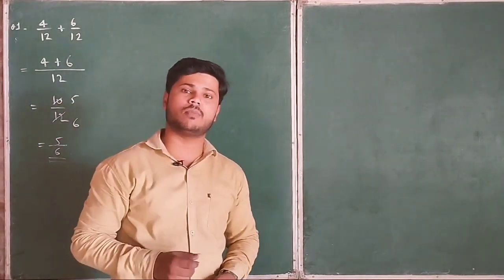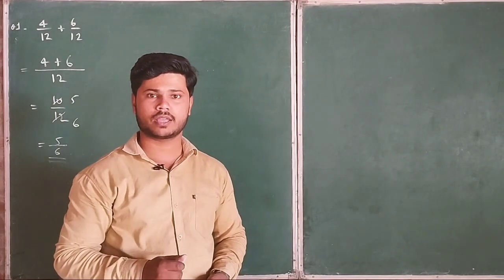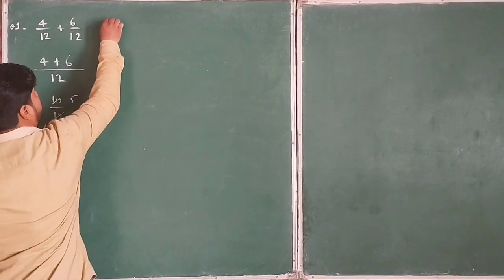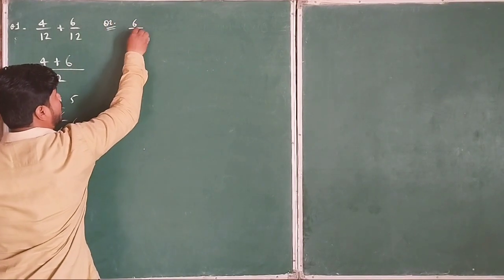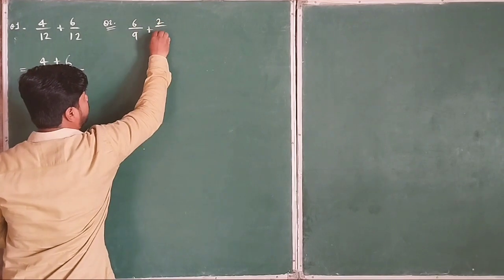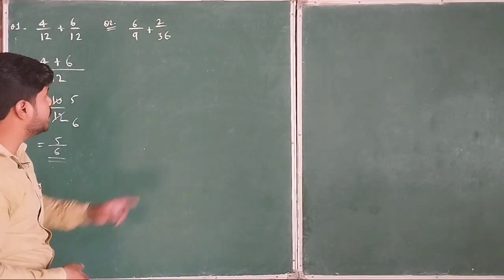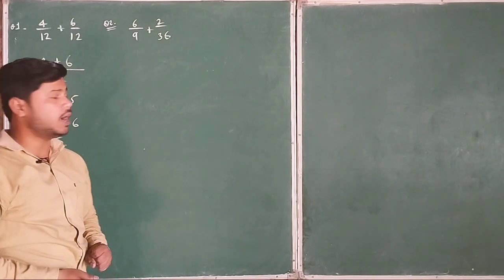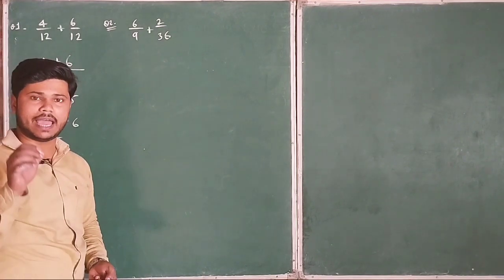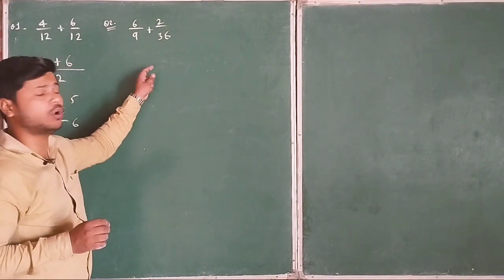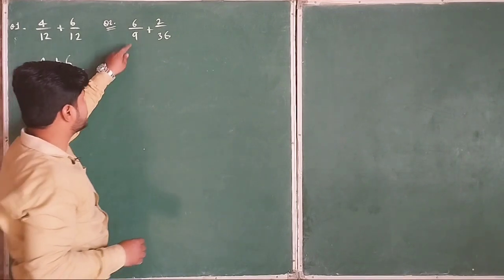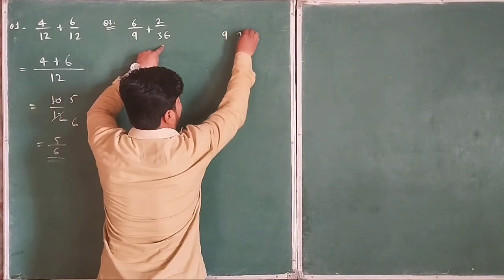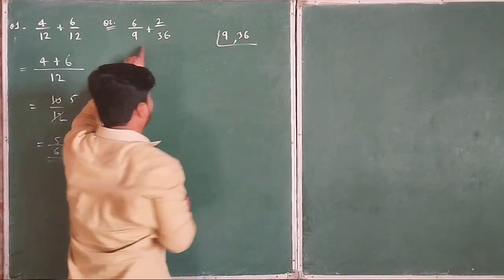When the denominators of fractions are not the same, how do you solve them? We see some examples. Question number 2: 6/9 plus 2/36. Here the denominators are not the same. To solve this, we first take the LCM of the denominators of both fractions — that is, LCM of 9 and 36.